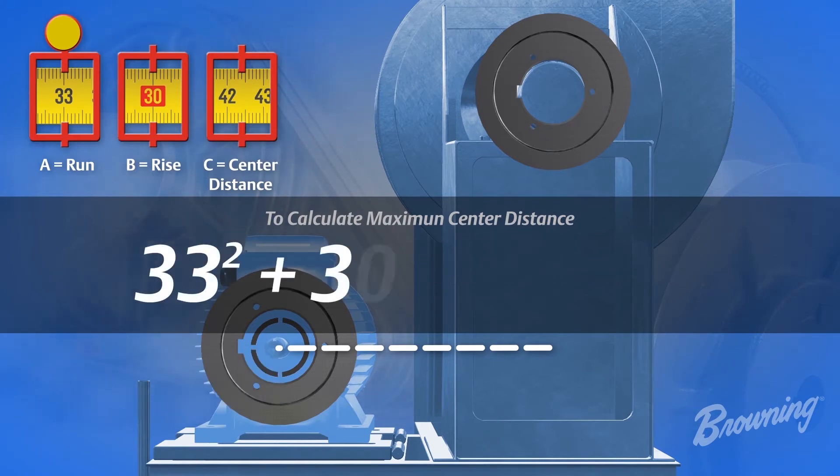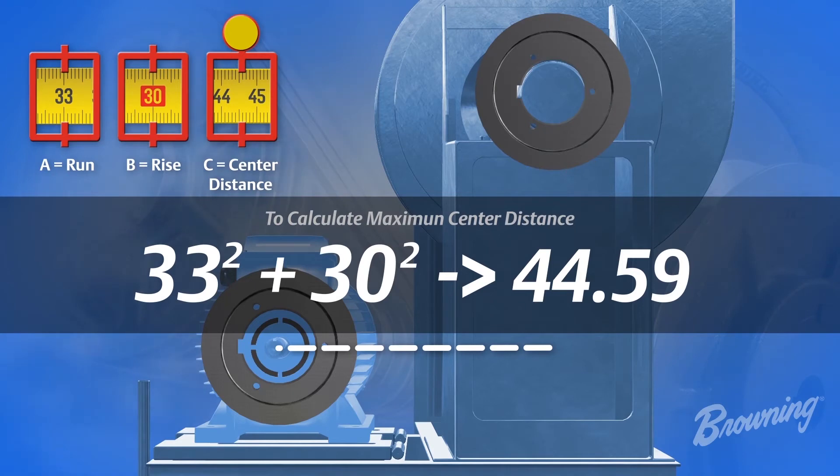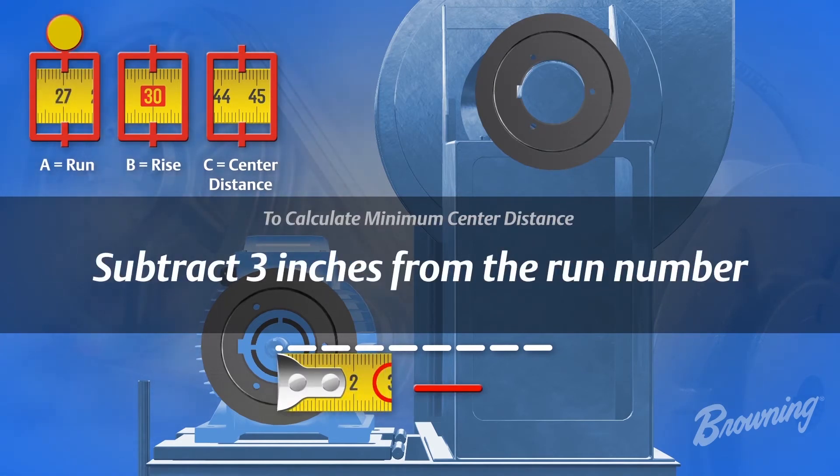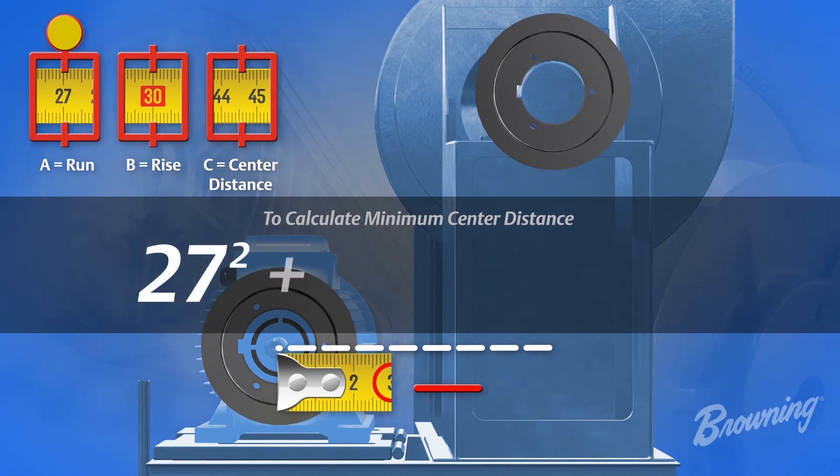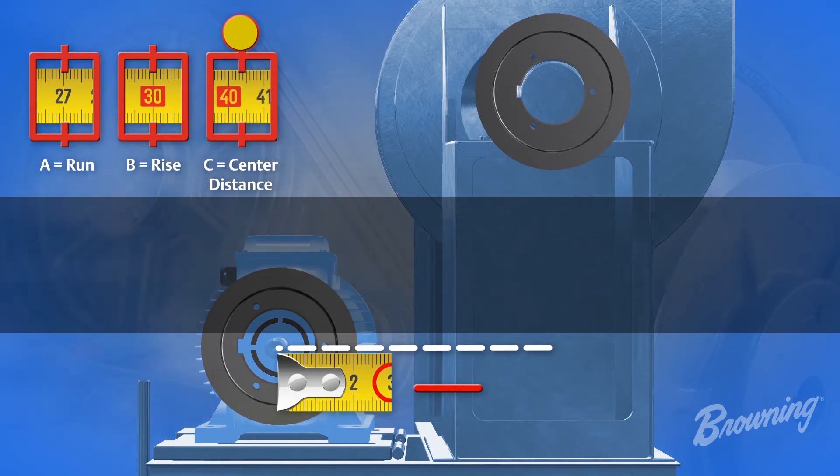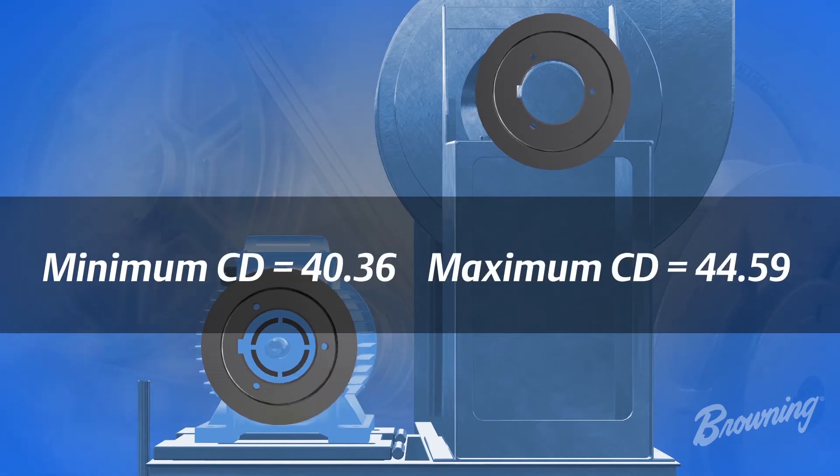To calculate minimum center distance, we would subtract 3 inches from the run number and make it 27. 27 squared plus 30 squared equals 40.36. So our minimum and maximum center distance numbers are 40.36 and 44.59.